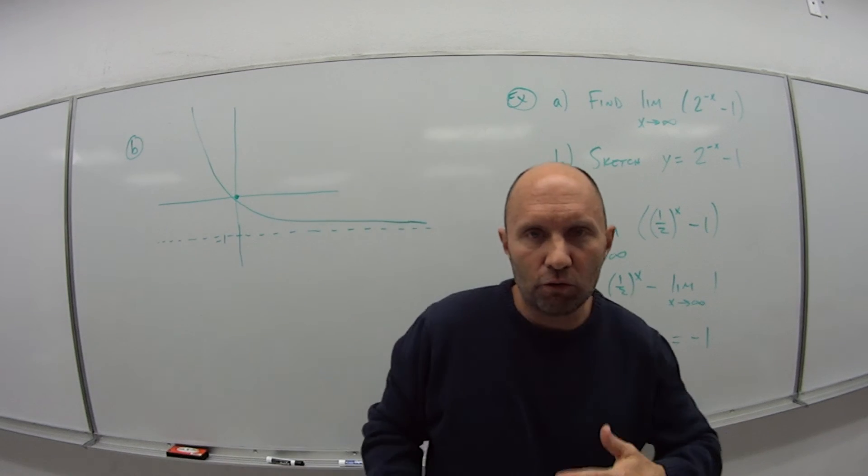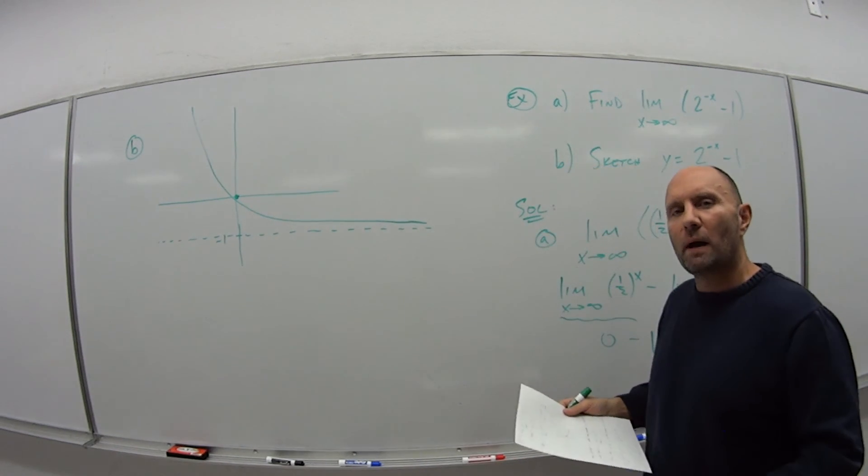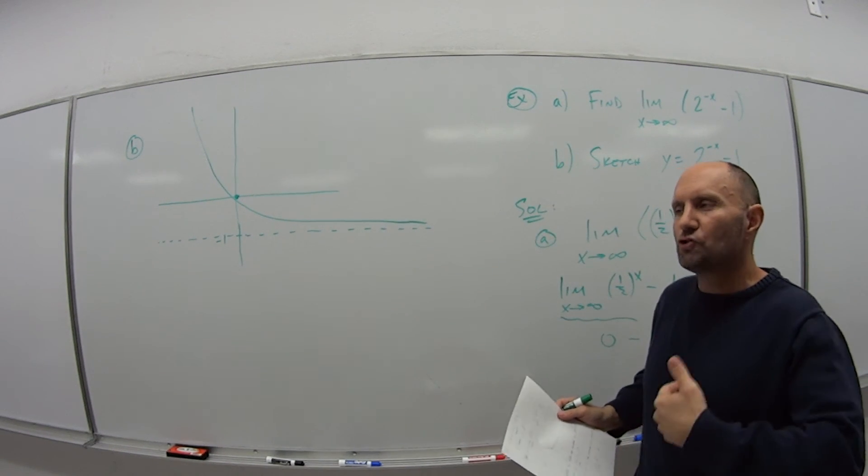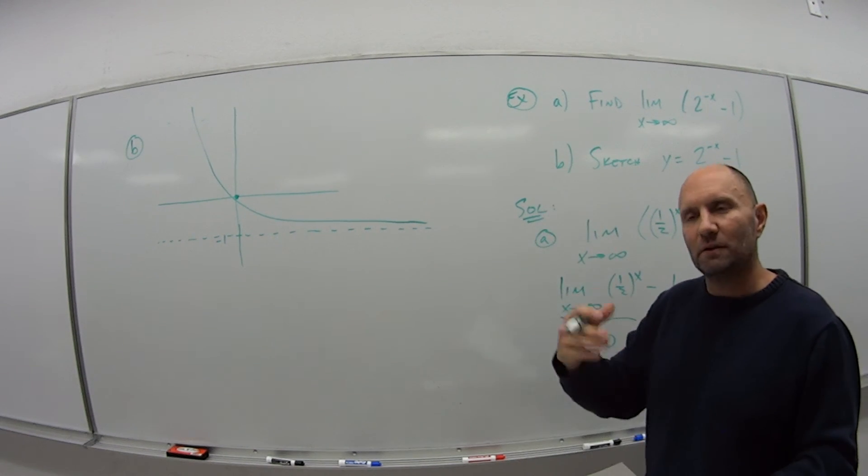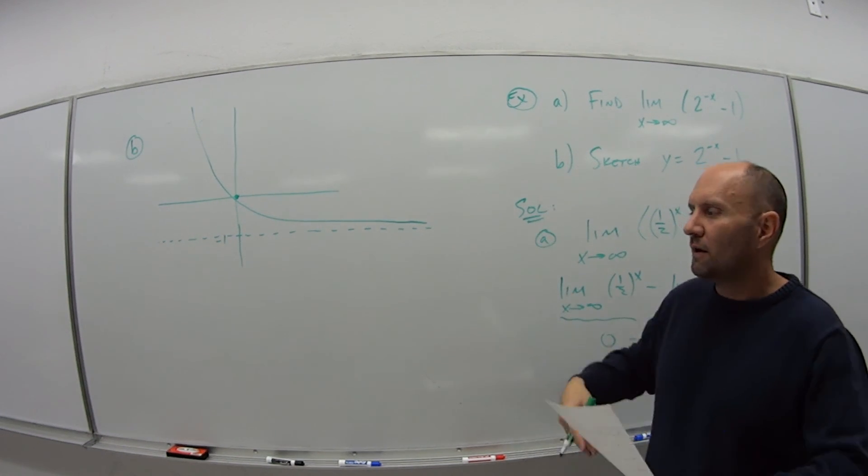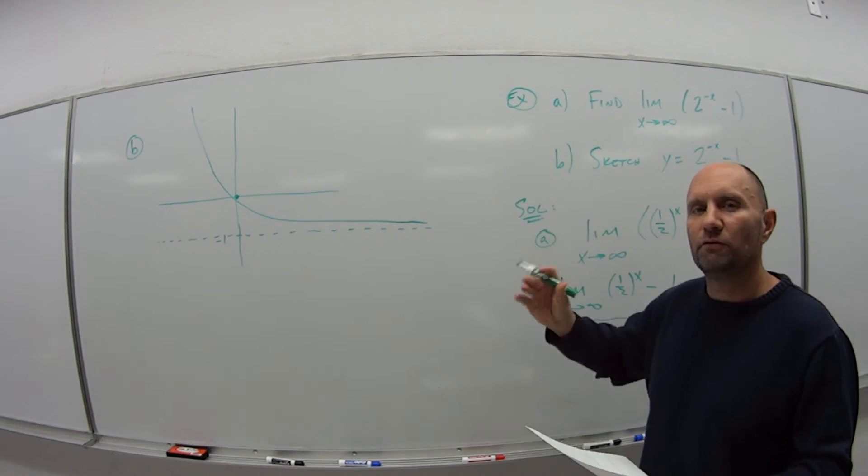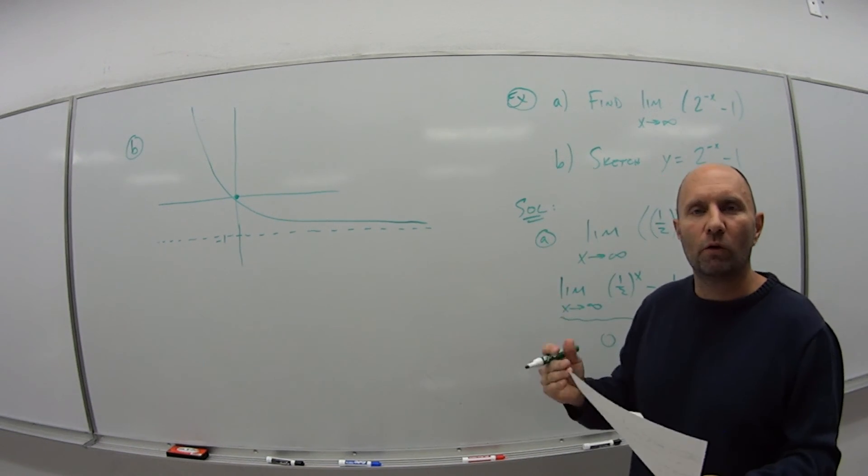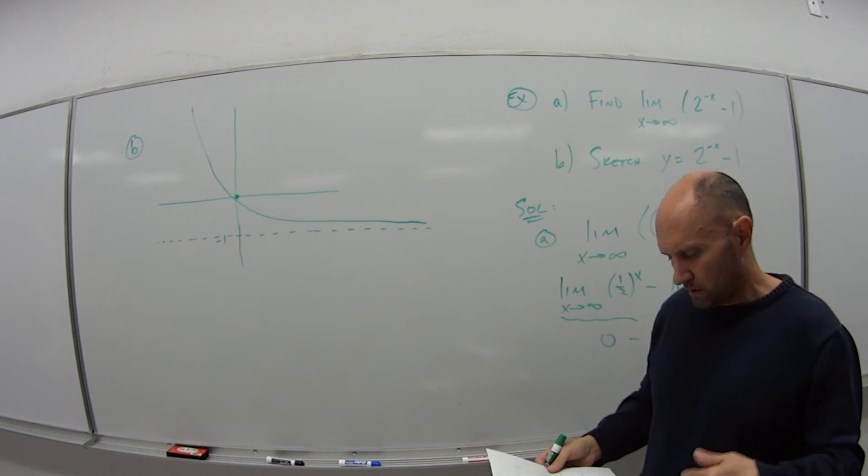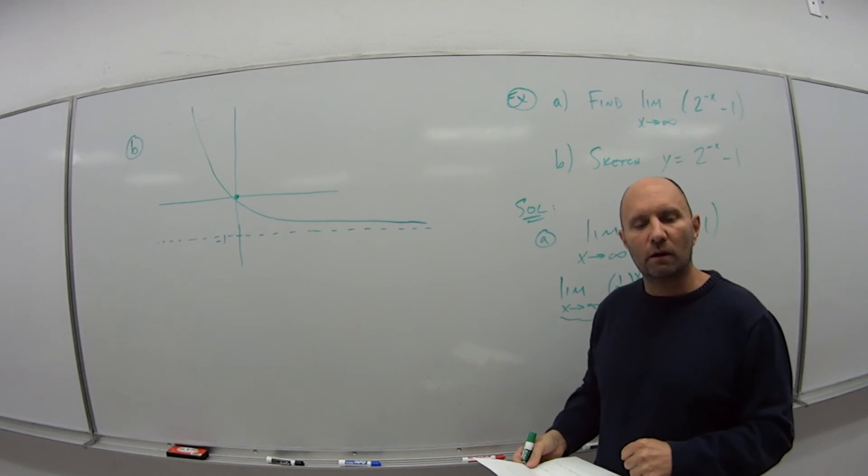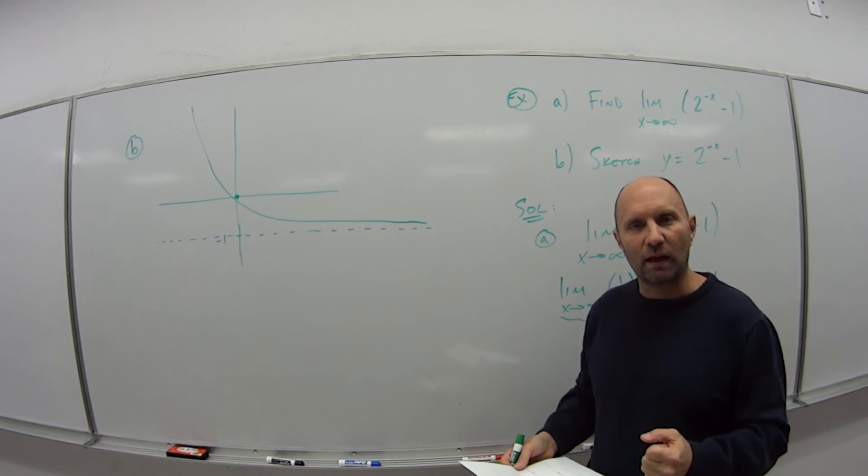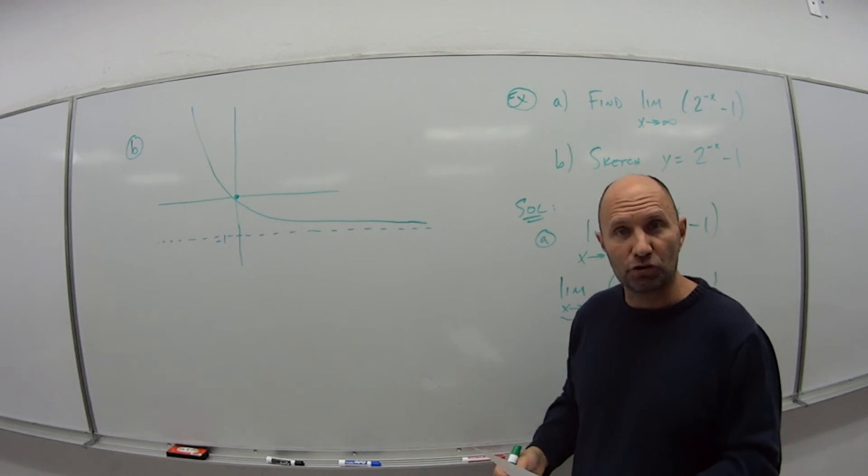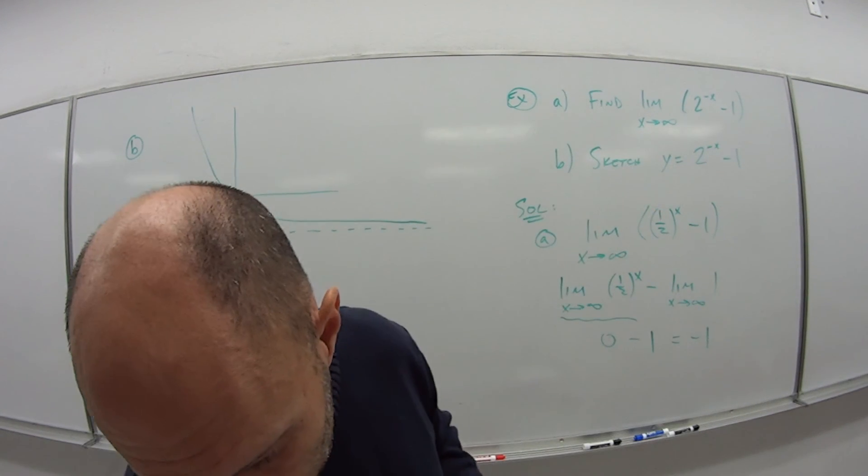So that's the first video, short and sweet. Just sort of a reminder of what is the exponential function, what are some of the laws that apply, and then in terms of the limit, applying some of our calculus to it, what happens depending on if the number is greater than 1 or a positive fraction. So come on back. We'll do video 2. We'll look at the number e, a couple examples, and that will wrap up section 3.1.